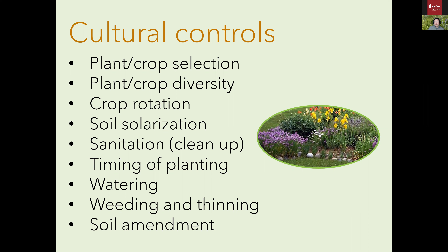For problems such as bacteria where there aren't really a lot of effective approaches, something like soil solarization might be useful. The idea of sanitation in the context of cultural control is just the basic idea of cleaning up your garden in a particular way — plants that are infected either by pests or pathogens should be removed from your garden because they become a source of future infestations.